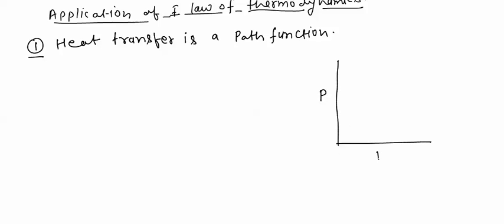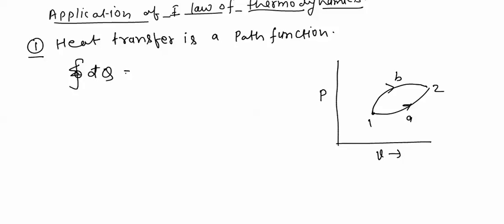Let's consider the first law of thermodynamics for a cycle. This is process point one, and from point one to two via path A, then from state two back to one via path B. According to the first law, the cyclic integral — the total net heat transfer in the system — will be equal to the total work transfer in the system. Let's consider the cycle 1→A→2→B→1.